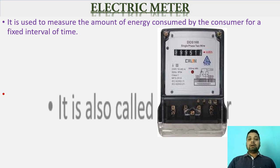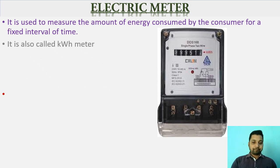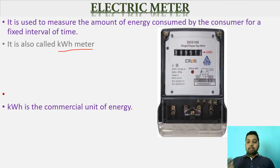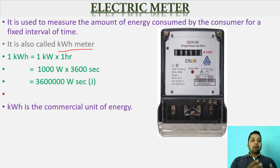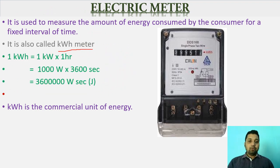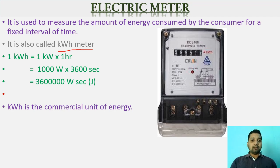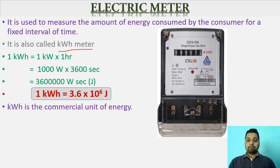This meter is also called a kilowatt-hour meter, or KWH meter. Kilowatt-hour is the commercial unit of energy — kilowatt is the unit of power and hour is the unit of time. To find the relationship between kilowatt-hour and the SI unit of energy (joule): one kilowatt-hour equals one kilowatt into one hour. Kilo is the prefix for thousand, so thousand watts into 3600 seconds gives 3,600,000 watt-seconds, which is joules. So one kilowatt-hour is equal to 3.6 into 10 to the power 6 joules.